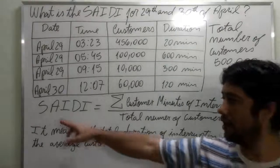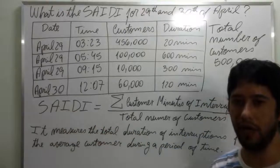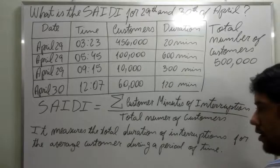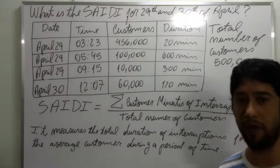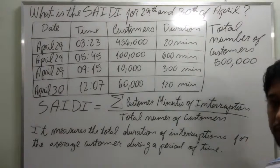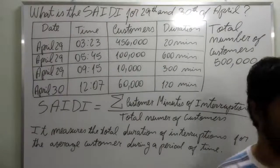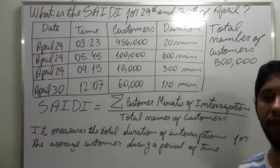SATI is the System Average Interruption Duration Index and it measures the total duration of interruptions for the average customer during a period of time. This period of time can be a day, a week, a month, or a year. So how do we calculate the SATI?